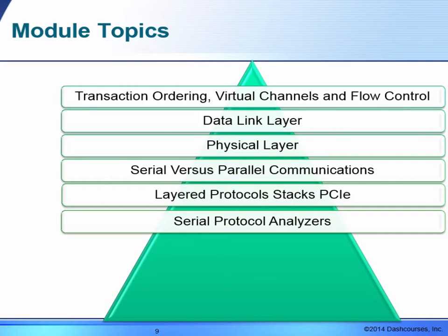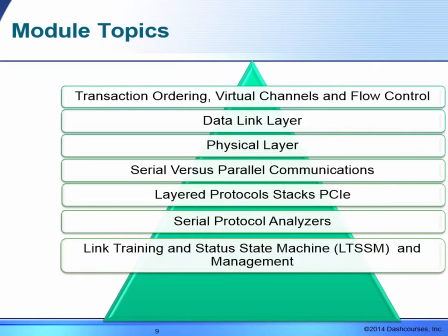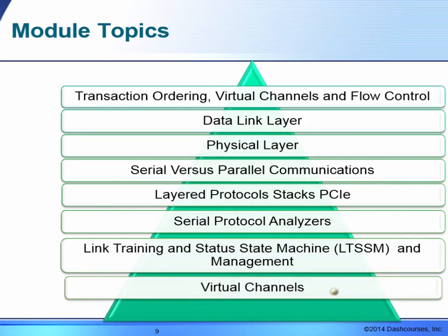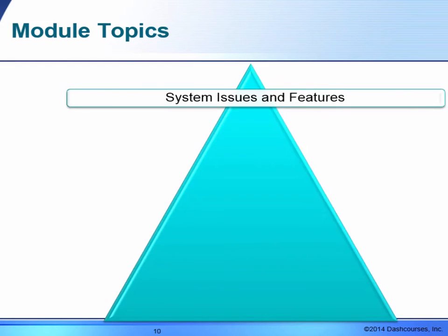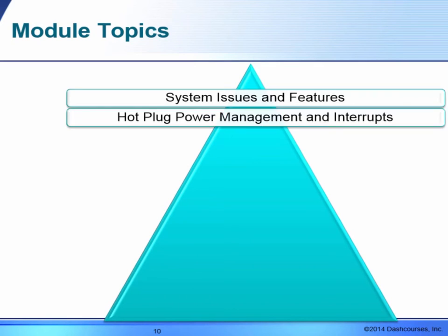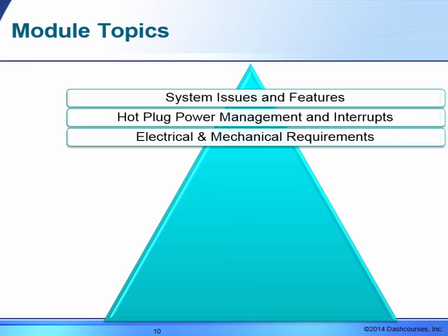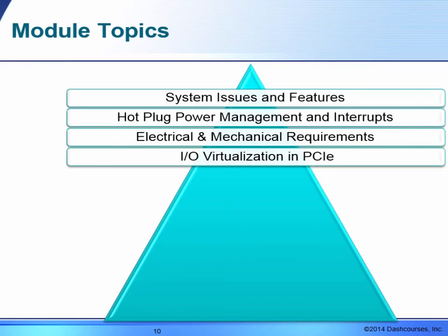We'll take a brief overview of serial protocol analyzers and their usage in PCI Express systems. We will look at the link training and status state machine used in PCI Express for bringing up the link between two PCI Express devices, virtual channels, system issues, hot-plug, power management, interrupts, and the electrical and mechanical requirements when designing with PCI Express. We'll also have a brief overview of IO virtualisation.